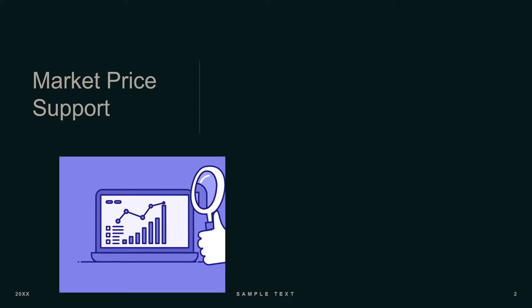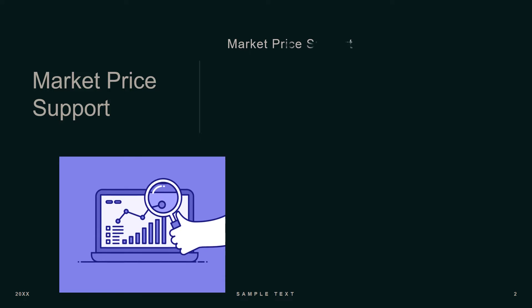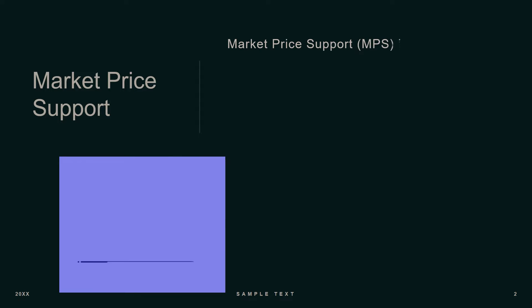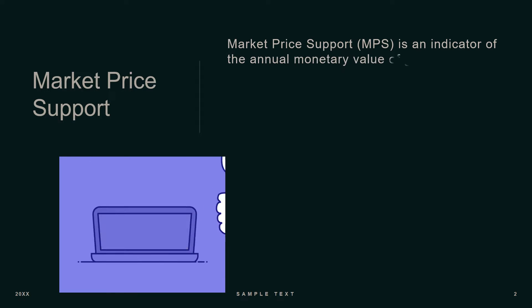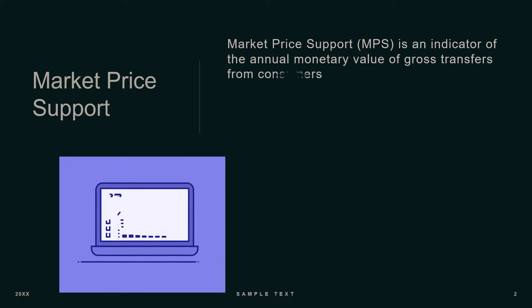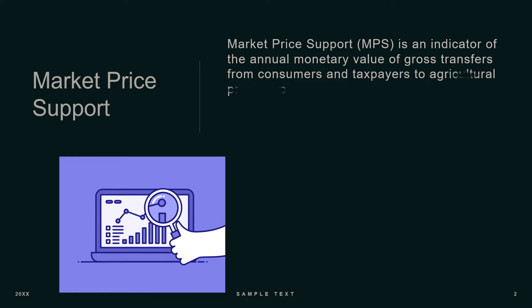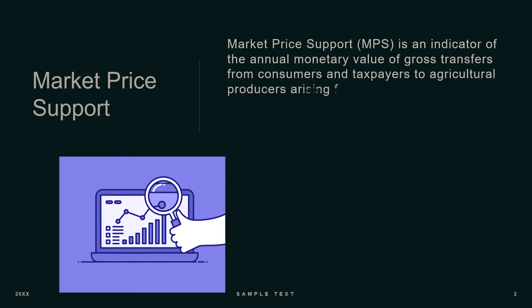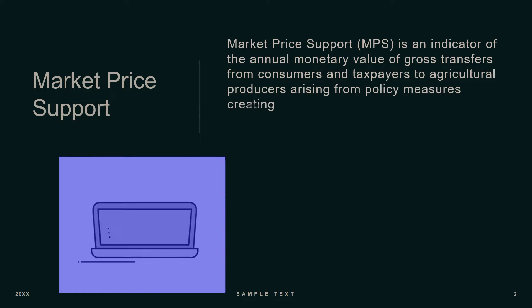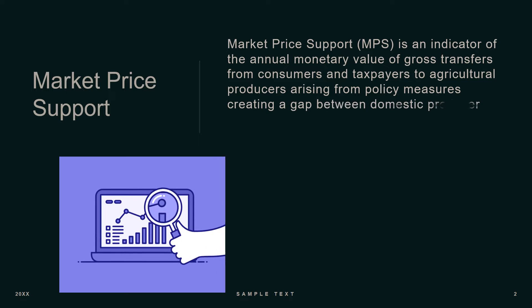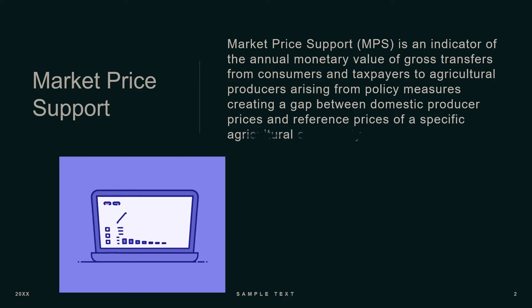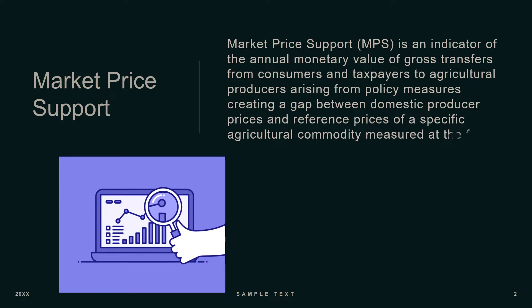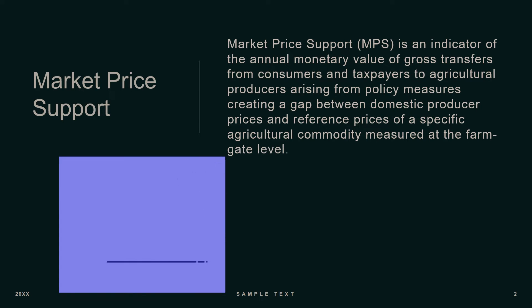Market Price Support, or MPS, is an indicator of the annual monetary value of gross transfers from consumers and taxpayers to agriculture producers, arising from policy measures creating a gap between domestic producer prices and reference prices of a specific agriculture commodity, measured at the farm-gate level.